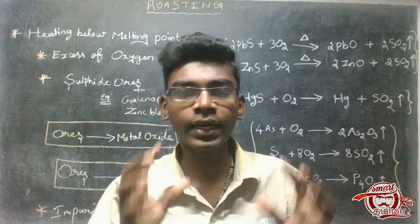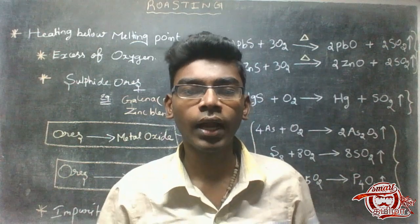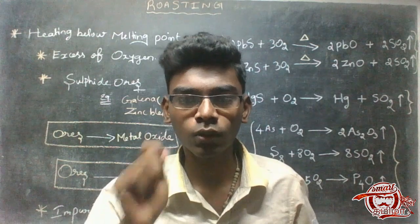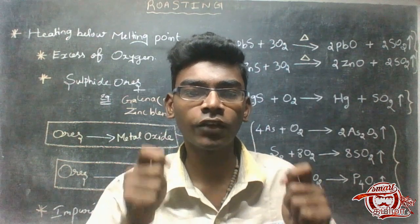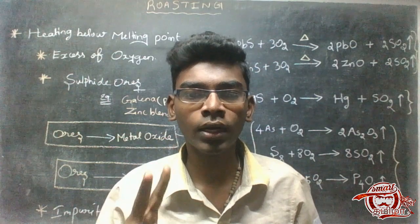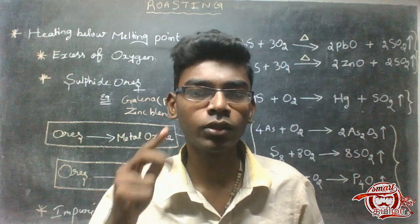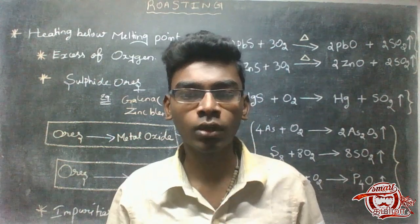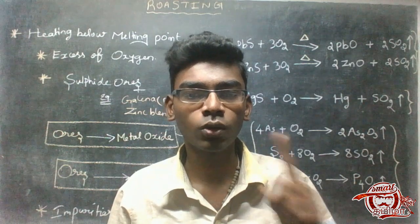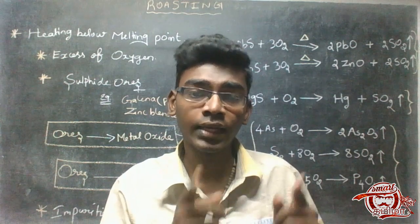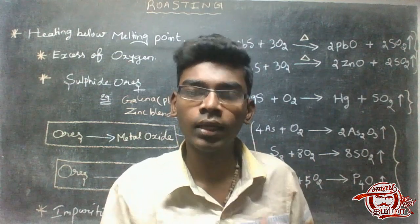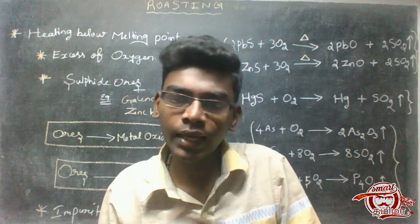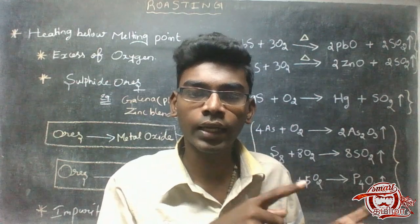Oxygen reacts to form a Metal Oxide. Next, Roasting involves sulfates. One example is Galena and Zinc. Metal Oxide is produced. Roasting is a direct Metal conversion — the Roasting is a Direct Metal process.